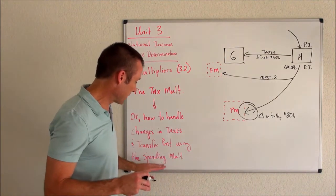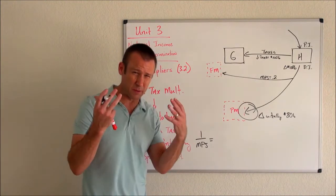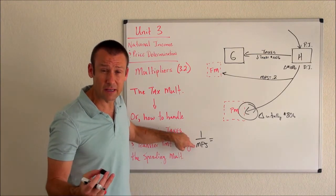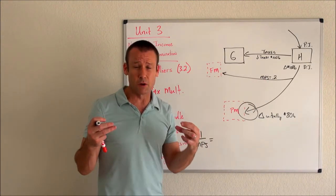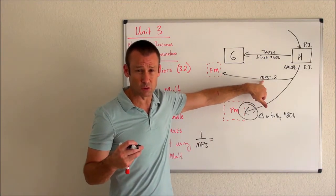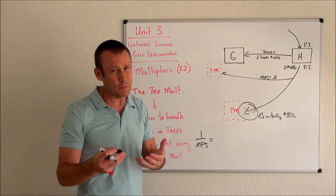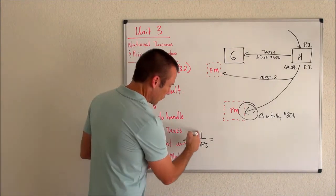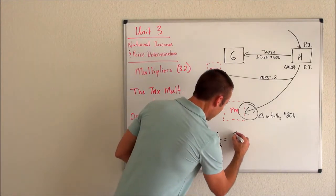Now that I know that, I can use my spending multiplier. The formula for it is 1 over the MPS. It is the inverse of the leakage away from spending — so if MPS gets bigger, it hurts our spending multiplier; if it gets smaller, our spending multiplier gets bigger. With MPS of 0.2, that gives us 1 over 0.2, and 0.2 goes into 1 five times, so the spending multiplier is 5.